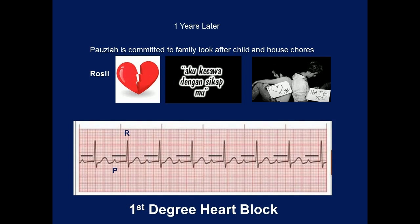There is a distance in the relationship between Pazia and Rossley. In other words, P is constantly a distance away from R — prolonged PR interval — but P follows the QRS.